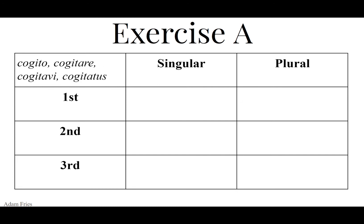That finishes off appello. We move on to cogito, cogitare, cogitavi, cogitatus. So for the perfect tense, third principal part, chop off the I, and write cogitav in all of the blanks. Then add the appropriate endings: I, ISTI, IT, IMUS, ISTIS, ERUNT. So we get cogitavi, cogitavisti, cogitavit, cogitavimus, cogitavistis, cogitaverunt.